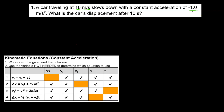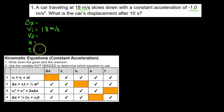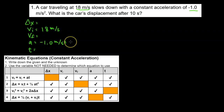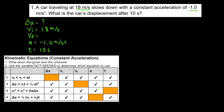The first thing we want to do is to create our variables chart. In the problem we see that the initial velocity is 18 meters per second, the acceleration is negative 1 meter per second squared, and the time is 10 seconds, and we're looking for the displacement. The variable that's not being used in this problem is the final velocity.